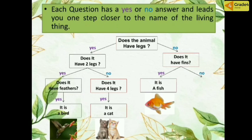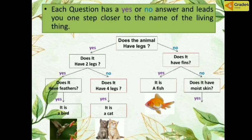And if the answer to does it have fins is no, you find a more specific question to make sure. If you answer yes to that final confirming question, the answer is snail. So for all four animals, we can find each one at the end using identification keys.